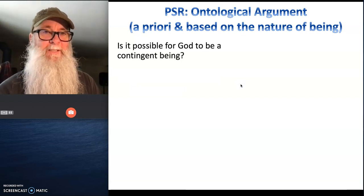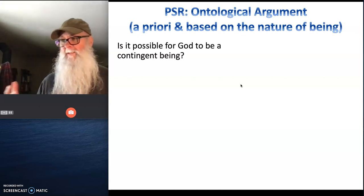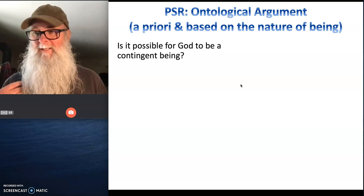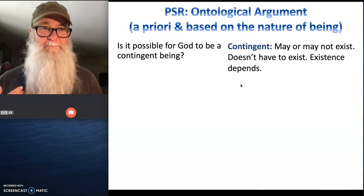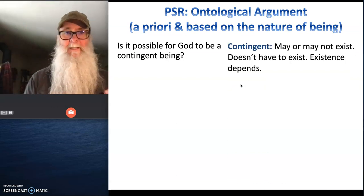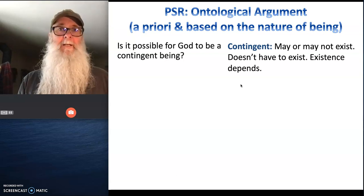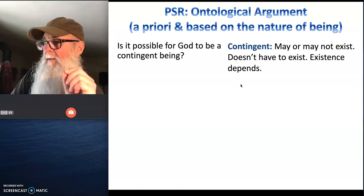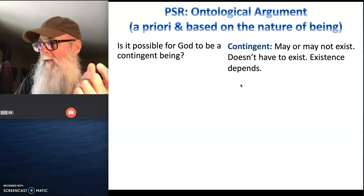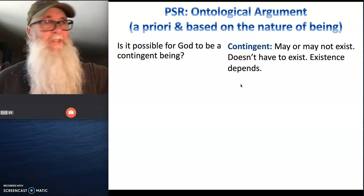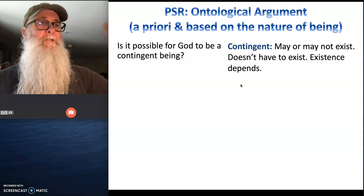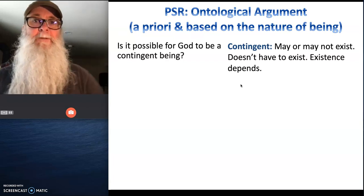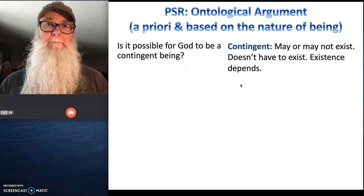Is it possible for God to be a contingent being? Contingent means it doesn't have to exist — its existence depends on something else, like my existence depended on my parents. Is it possible that God could have existed or may not have existed, and its existence depended on something creating it? We'd have to say no. It would be impossible for God to be a contingent being, because if God is the ultimate, supernatural, singular source of all things, then that thing couldn't be dependent on something else for its existence — because then that something else would actually be God. So if God is the supreme being, God can't, by definition, have its existence depend on something else, because that something else would be the supreme being. So we've eliminated the possibility that God could be a contingent being.